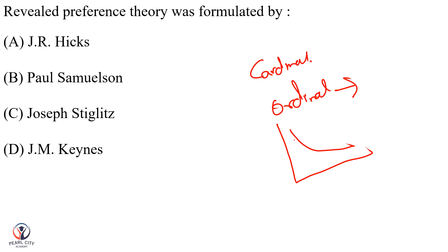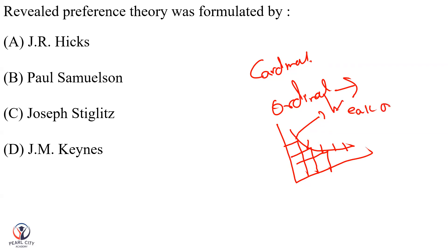The indifference curve is the locus of points where the consumer will get the same level of satisfaction at various combinations. Points A, B, C, D, E — if you choose any combination, the consumer will get the same level of satisfaction. This is the indifference curve. But the indifference curve represents weak ordering.